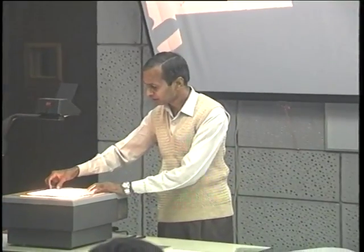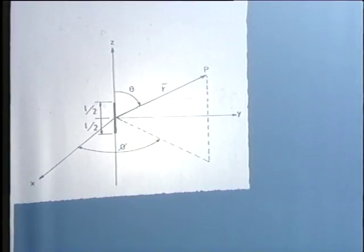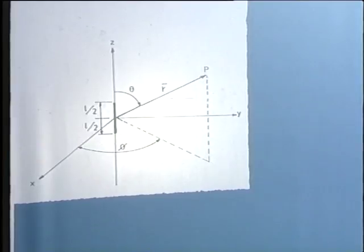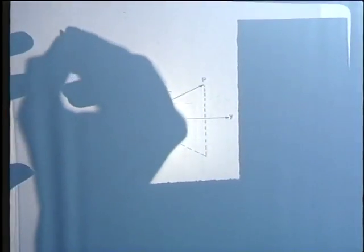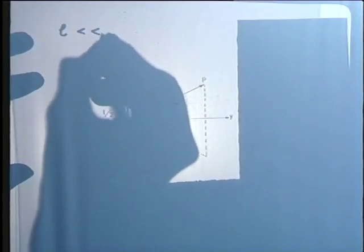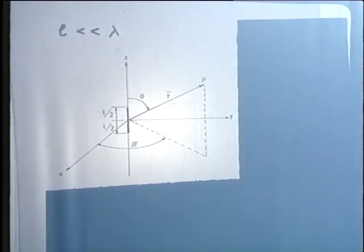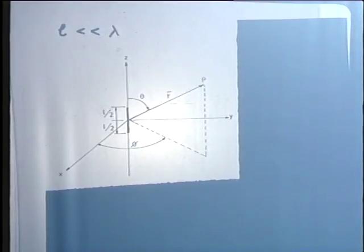The Hertzian dipole is a very short length. In some textbooks, the length is represented by dl to emphasize that it is very short. When we say short, in the context of our course, what we have in mind is that the overall length L is much less than a wavelength. The advantage of taking a very short conducting wire is that we can, without too much error, say that the current is uniform over the entire length.